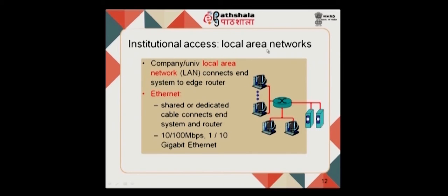For institutional access, a local area network connects end systems to the edge router. Ethernet is a popular LAN technology, using shared or dedicated cables connecting end systems to routers via ethernet switches. Data rates range from 10 Mbps in early ethernet all the way up to 10 gigabits per second with modern gigabit ethernet.